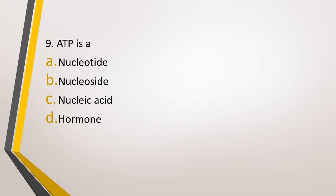Question number 9. ATP — adenosine triphosphate — is a: option A, nucleotide; option B, nucleoside; option C, nucleic acid; or option D, hormone. The correct answer is option A — ATP is a nucleotide.